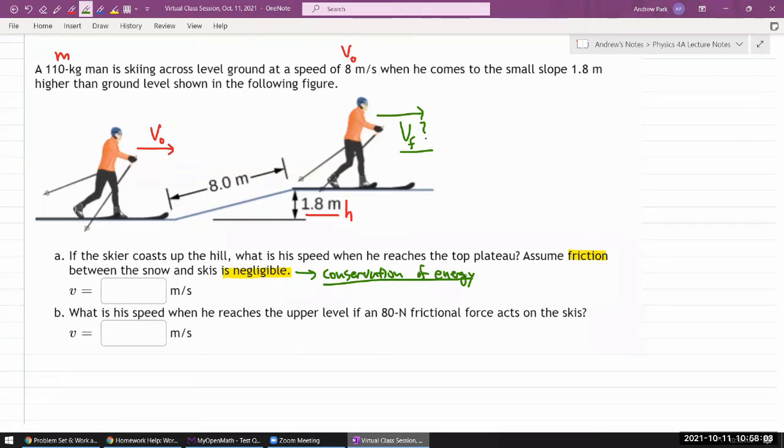So whenever you are using conservation law strategy, the very first thing you need to do is verify that the quantity that you think is conserved is conserved. So here, me noting that friction is negligible is that step. We have no friction and we can say energy is conserved.